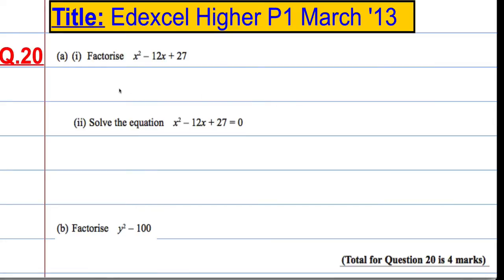So this is your typical quadratic. Because it's x squared, we're going to have x in each bracket. And we need two numbers that multiply to give me plus 27, but add to give minus 12. So a little bit of thought.